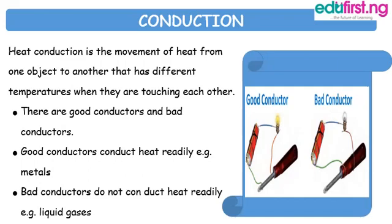Bad conductors are materials that do not conduct heat readily, for example liquids and gases. When particles in a metallic substance are heated, the particles vibrate, heating successive ones not in contact with the heat source. This raises the temperature until all the particles in the metallic substance are heated up.